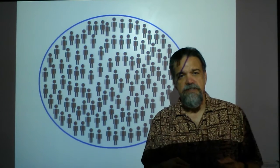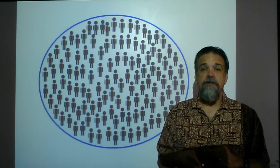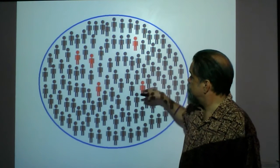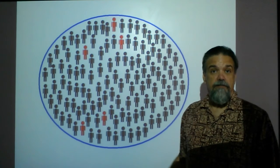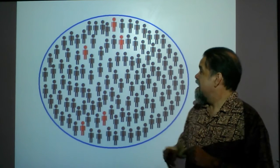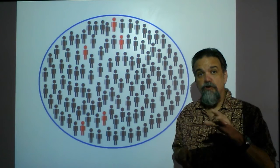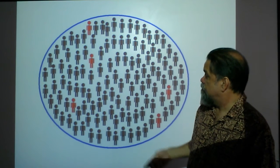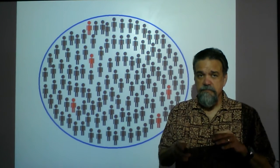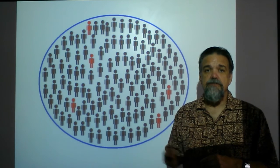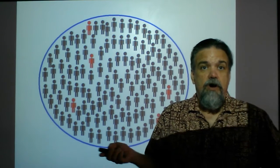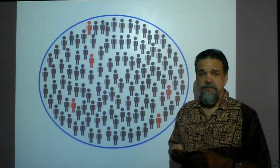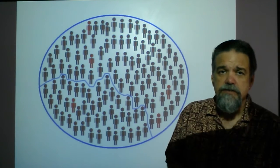A simple random sample, or SRS, is the most basic type. Say I have a population and I want to choose five members. In an SRS, first, anybody in the population could be chosen, and second, any possible combination of five individuals could be selected. It's the most truly random option, but why not always use it? Because it's logistically very difficult to execute.